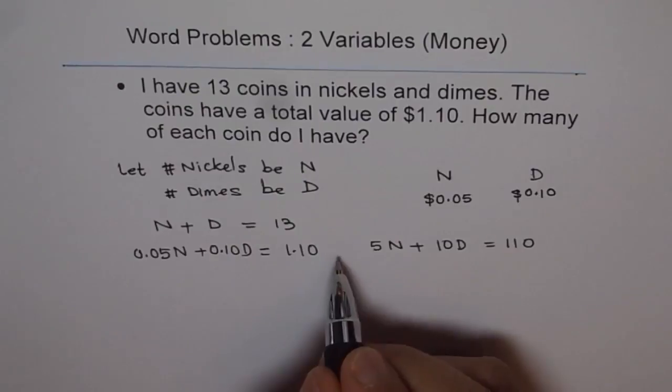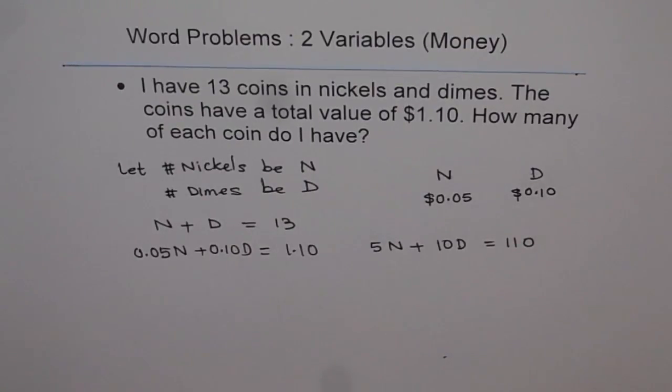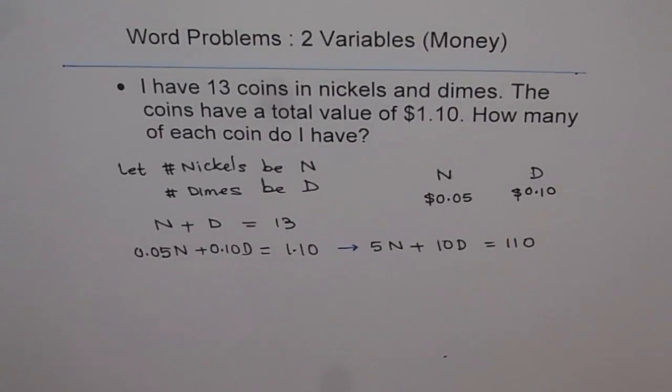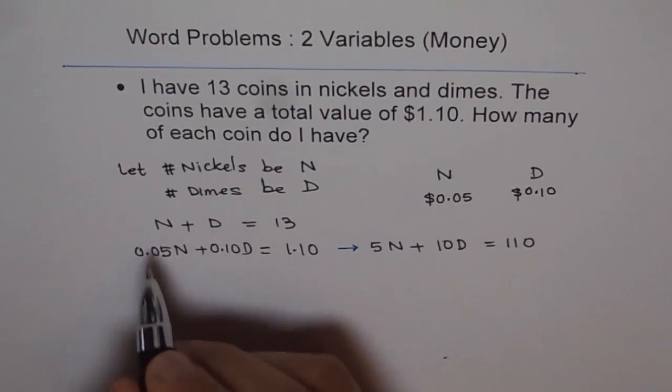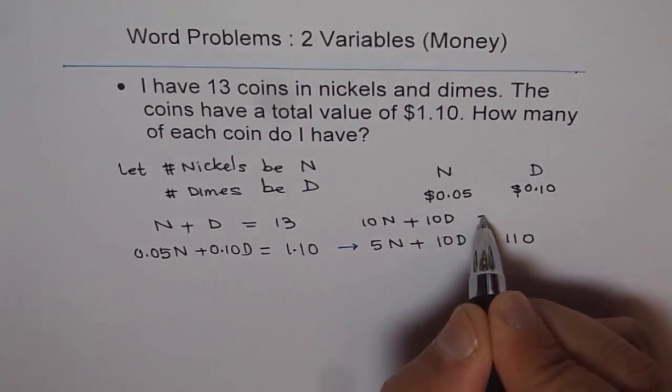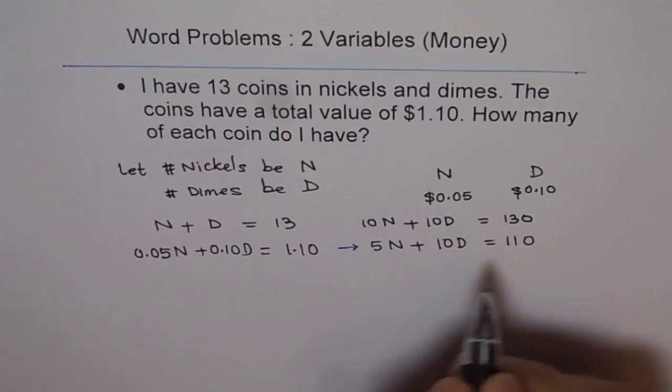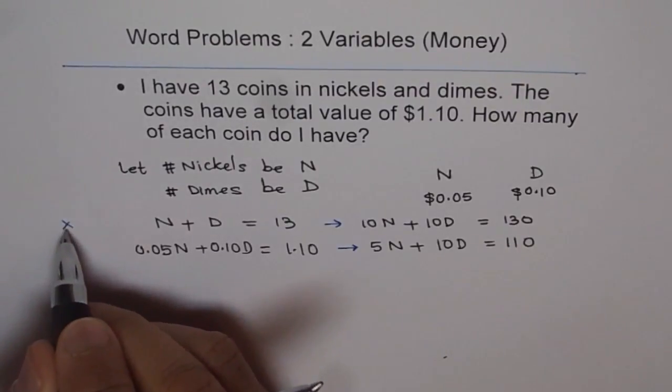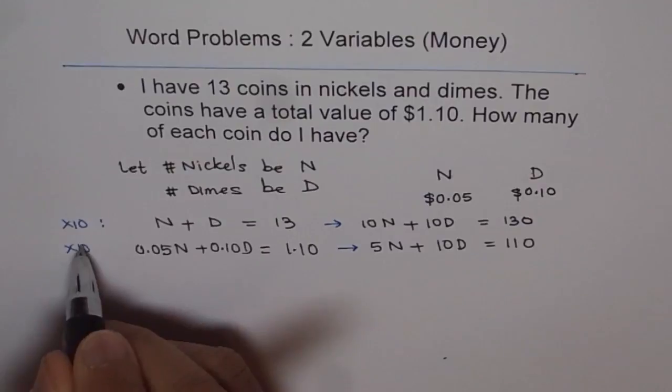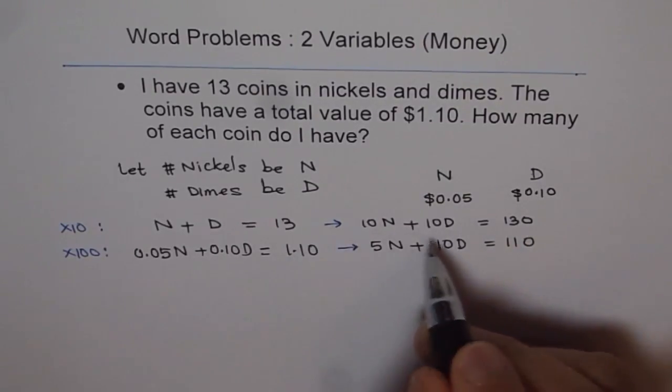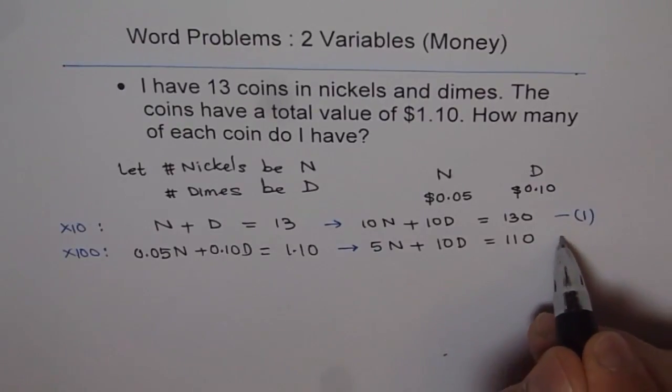Now, this is my second equation. The first equation is, nickels plus dimes is 13. If I multiply the first equation by 10, what do I get? I get 10 nickels plus 10 dimes equals to 130. So I multiplied the first equation by 10. So what I did was, I did times 10 for the first equation and times 100 for the second equation. Because I want to show you elimination method here. So I got two different equations transformed like this. Let me name them as equation 1 and equation 2.